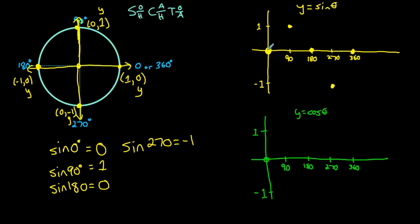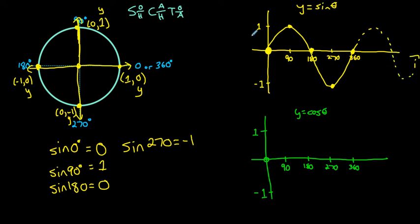If we connect these points — and we could find points in between using our special triangles — we find they form a smooth curve. This is what the graph of sine is going to look like. This function is periodic, so this pattern of y-values oscillating between 1 and negative 1 continues every 360 degrees. We could also rotate in the negative direction by rotating clockwise instead of counterclockwise.